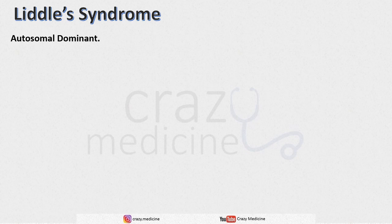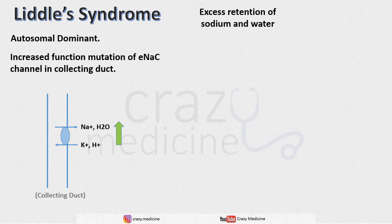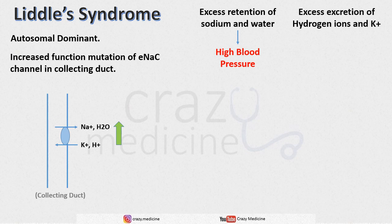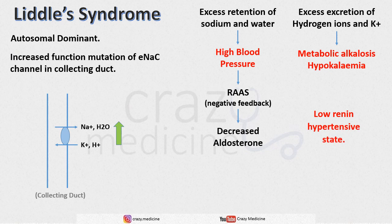Next is Liddle syndrome. It is an autosomal dominant condition where there is a gain-of-function mutation of the ENaC channel in the collecting duct. It causes excess retention of sodium and water, which will cause an increase in blood pressure. There will also be excess excretion of hydrogen ions and potassium, leading to metabolic alkalosis and hypokalemia. Increased blood pressure will cause negative feedback inhibition of the renin-angiotensin-aldosterone system, resulting in decreased aldosterone — so this condition is low-renin in a hypertensive state. The drug of choice is amiloride, which inhibits the ENaC channel in the collecting duct.